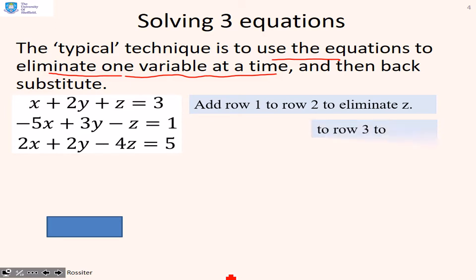Let's look now at solving three equations. Again, the typical technique is to use the equations to eliminate one variable at a time and then use back substitution. First thing we might do is add row one to row two to eliminate z. And then add four times row one to row three also to eliminate z. And we'll end up with these two equations. So we've now reduced the three equations to two and eliminated the variable z.